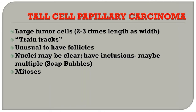The problem with tall cell variant of papillary carcinoma is what exactly it is from a pathology point of view. The tumor cells tend to be large, and various authors and students of thyroid cancer have defined large tumor cells and the ratio of length versus width in various ways. Because of these varying definitions, it becomes pretty impossible to get a whole bunch of pathologists — even so-called endocrine pathologists — to agree as to what a tall cell variant is.